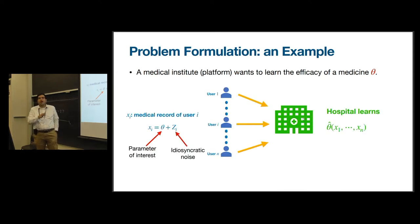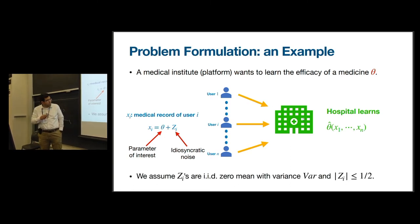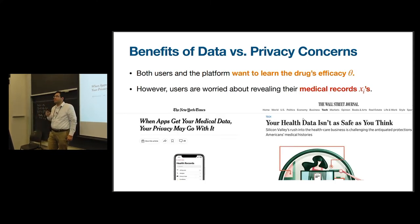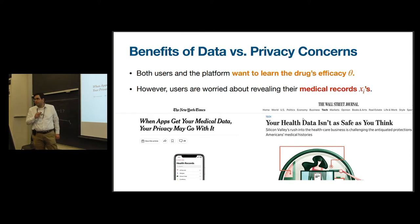We denote users as patients interacting with this platform. In particular, user i's medical record Xi is in the form of theta, the parameter of interest, plus some noise Zi. For this talk, we assume Zi are zero mean, iid, unbounded by half. The hospital is trying to learn an estimate of theta, which we denote by theta hat, as a function of medical records of users X1 to Xn. Both the platform and the users want to learn the drug efficacy. However, users are worried about revealing their medical record throughout this process of learning theta.